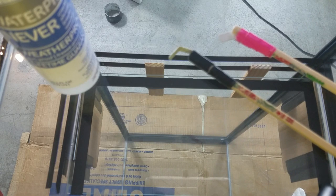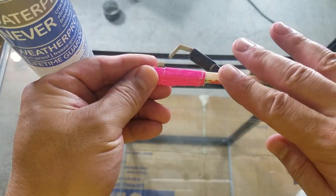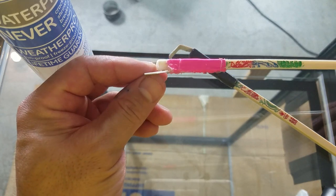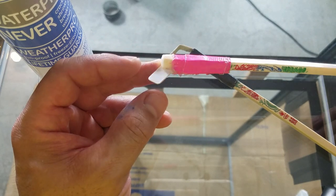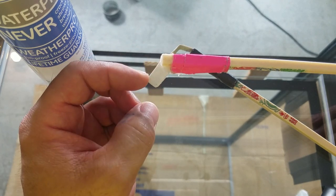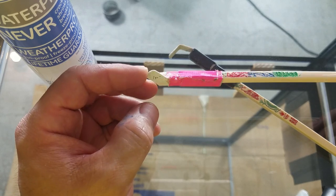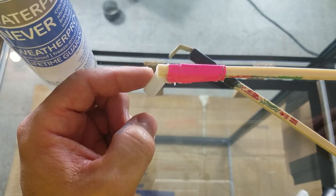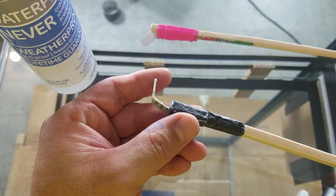Alright, so before I start siliconing, I want to show you some tools that I made. These are just chopsticks. But on the end of these chopsticks, I taped on these pieces of plastic. This is just a cut up piece of credit card. These are tools that are going to help me smooth out the bead. A lot of people use their fingers, but I'm going to use these plastic tools that I made to make it look nice and uniform.